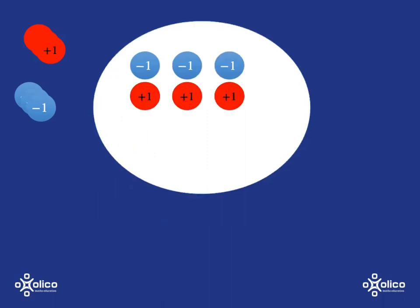Now that we've got that idea, we can look at this pot and see that it currently has a temperature of zero, because you've got all those pairs of negative one and positive one — a hot and a cold — which cancel each other out to zero.